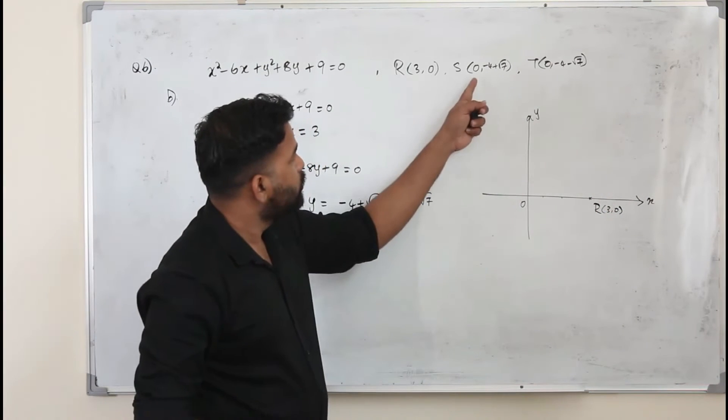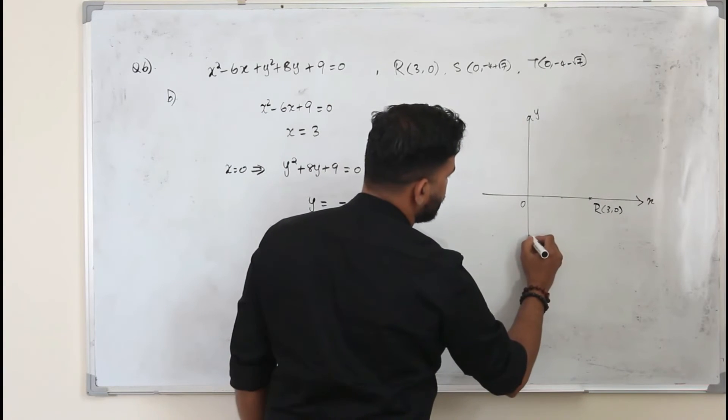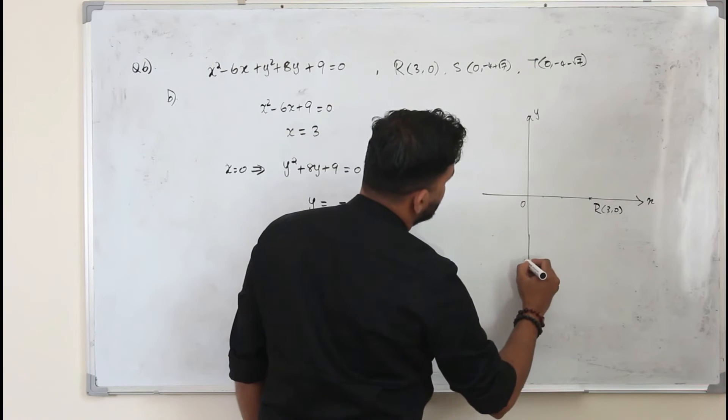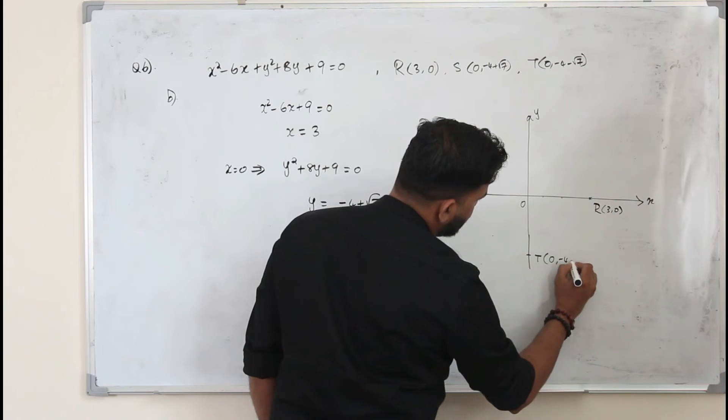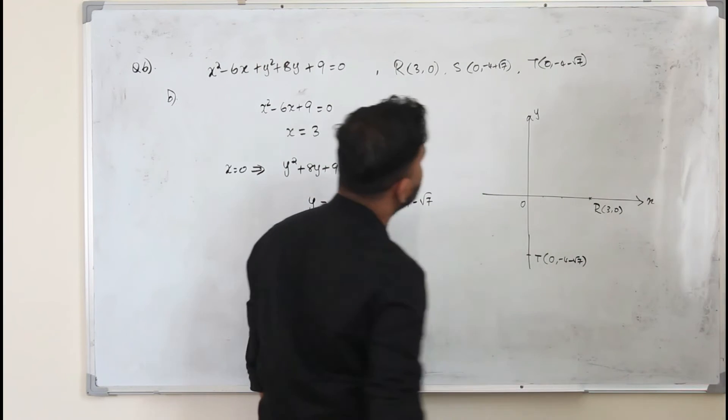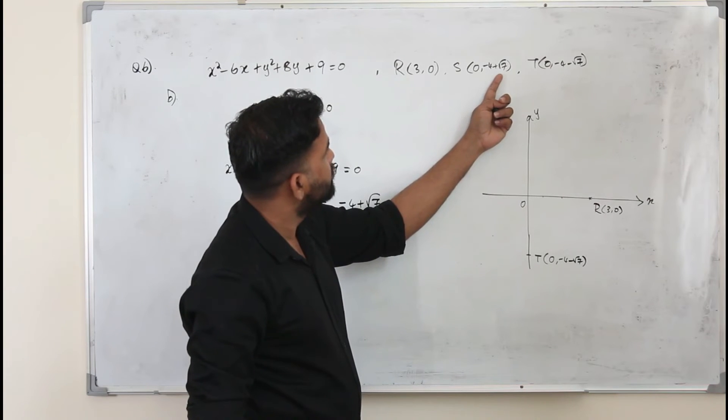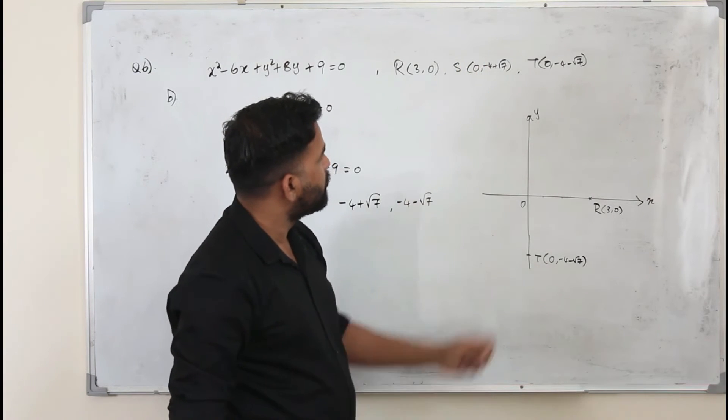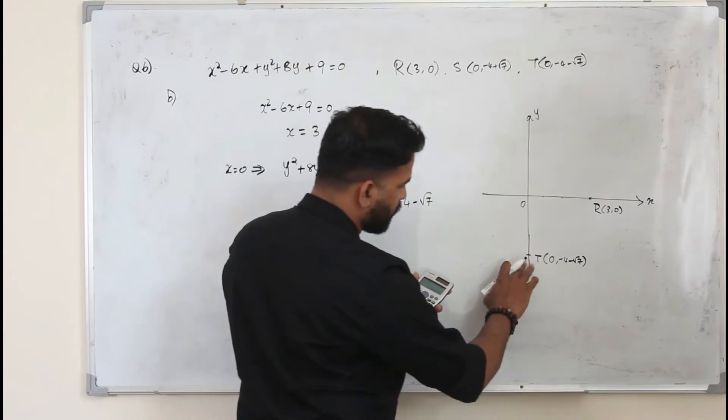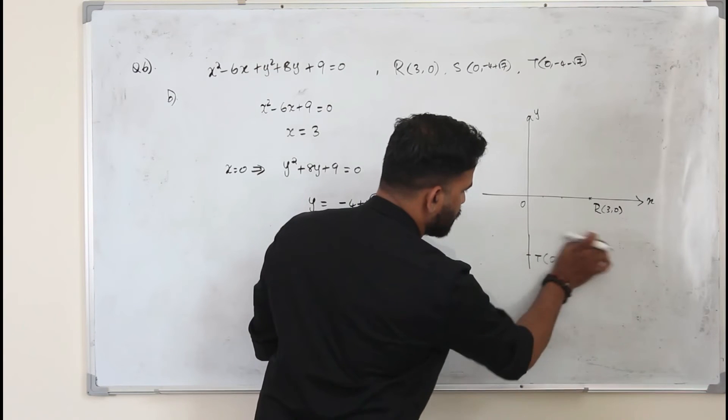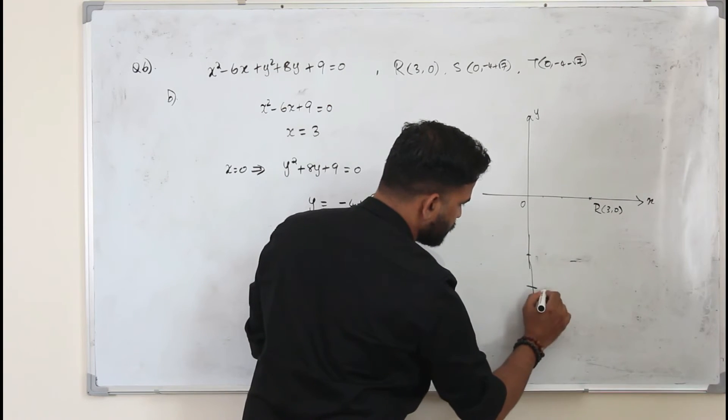And there are two points on the y-axis. One is negative, negative value, which is, let's say here, t of 0 comma minus 4 minus root 7. And this will be another negative number. So we need to know which one is bigger. So this value is approximately 6 point something. So I am going to write this value here, t.